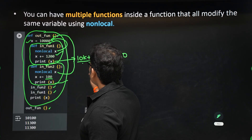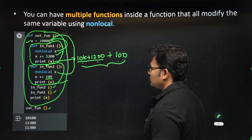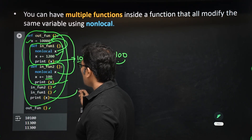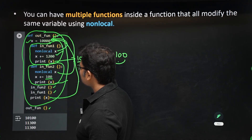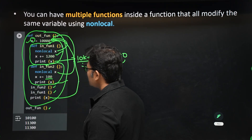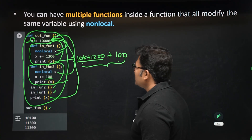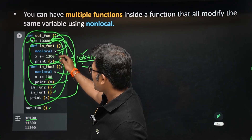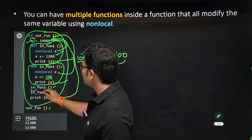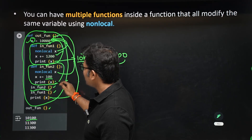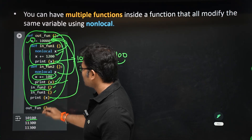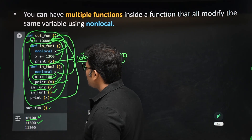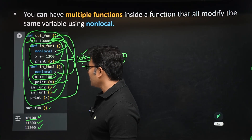In function two, non-local x also refers to the same closest enclosing x. 100 is added to it. So the value becomes 10,000 + 1200 + 100 = 11,300. Function two is called first, adding 100 to get 10,100; then function one is called, adding 1200 to get 11,300. Finally, printing x in the outer function prints 11,300.